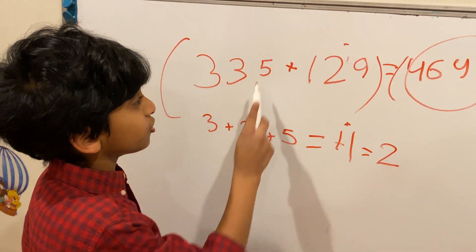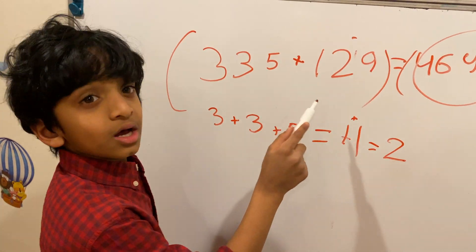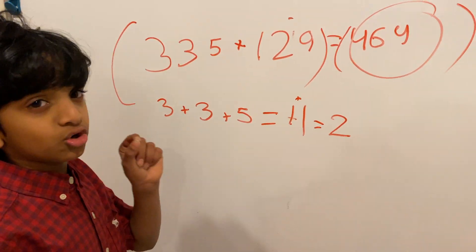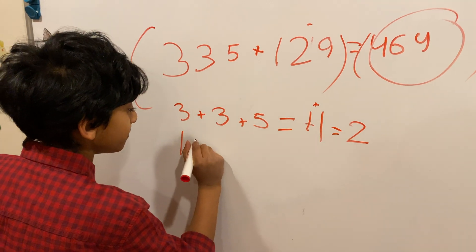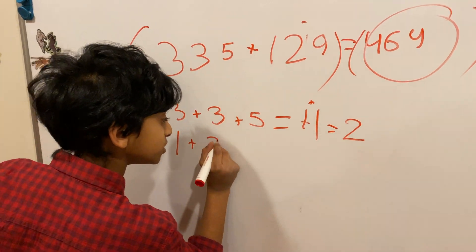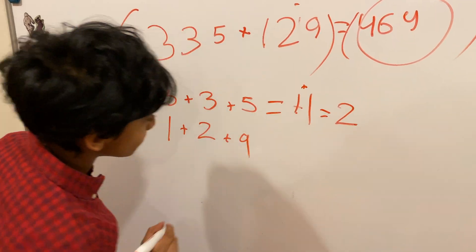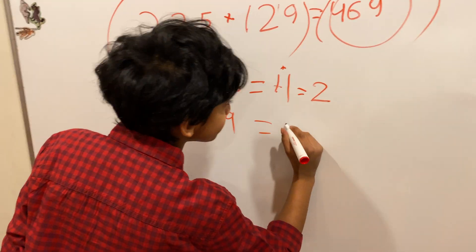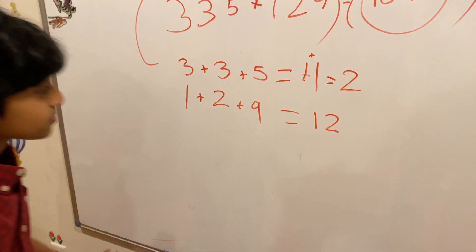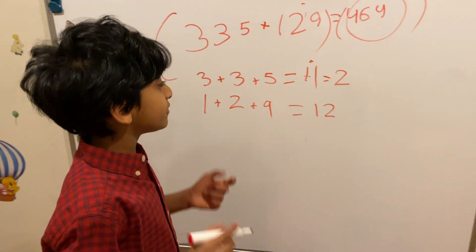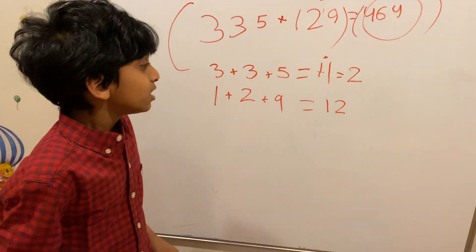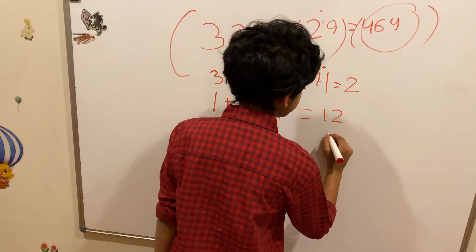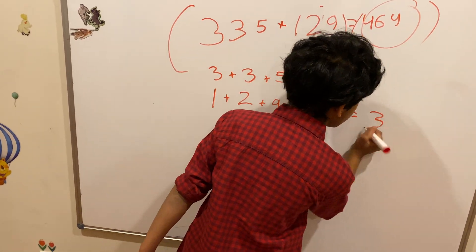Now let's look at the other part of the left hand side: 129. So 1 plus 2 plus 9 equals 12. We have to make 12 into a single digit number, so 1 plus 2 is 3. So 3 is our answer for that part.